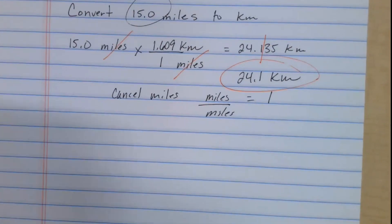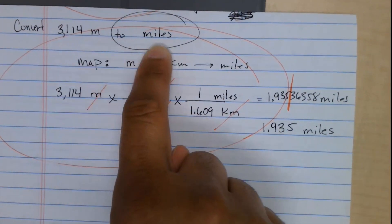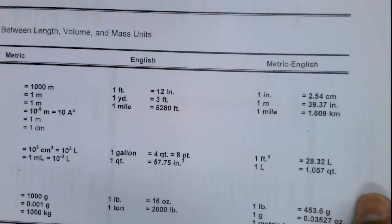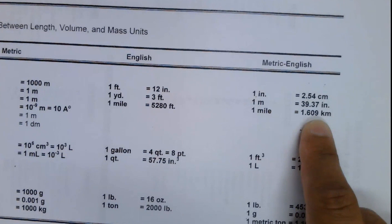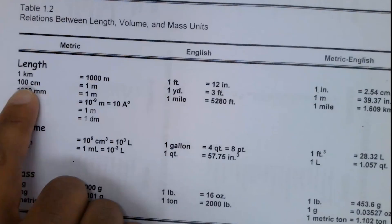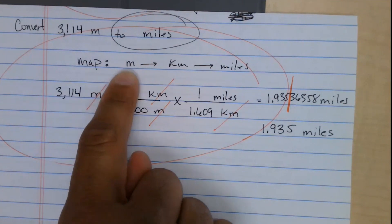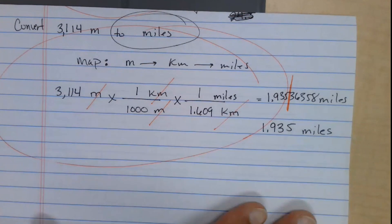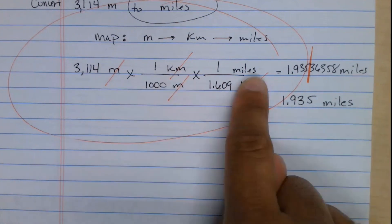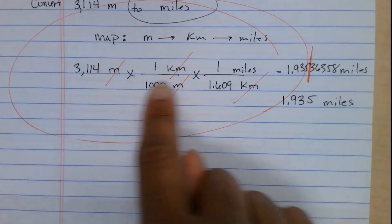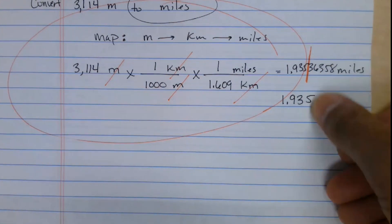The other example was converting meters to miles. Notice there's no direct meter-to-mile conversion in the table, so you have to be creative: convert meters to kilometers, then kilometers to miles — doing it all in one step. I showed that here. We start with four significant figures, so we answer to four significant figures.